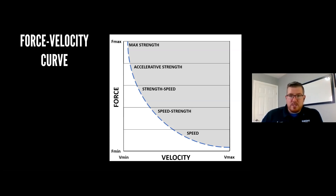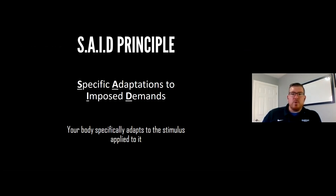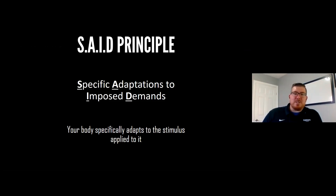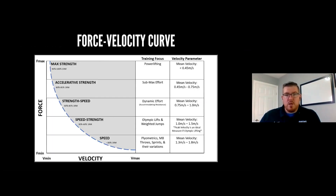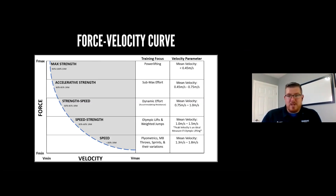If we look at the SAID principle — specific adaptations to imposed demands — your body specifically adapts to the stimulus applied to it. Applying that to the force-velocity curve: if we know that training max strength requires a certain speed range, we know exactly what stimulus we're training. Focus on the velocity parameter column: for max strength we have a mean velocity of less than 0.45 meters per second.